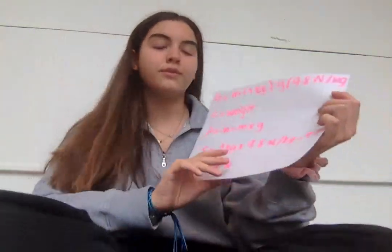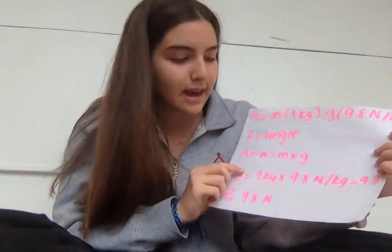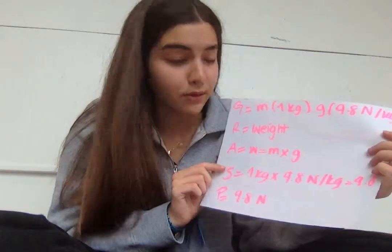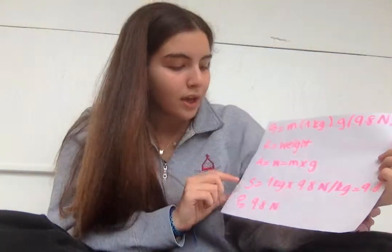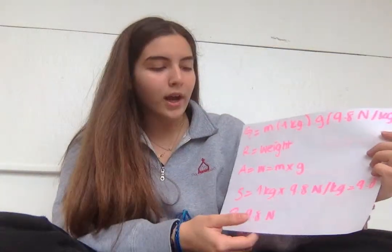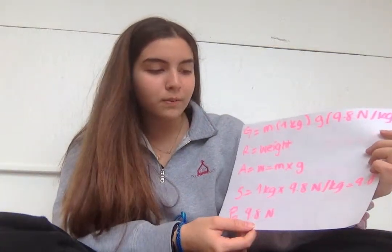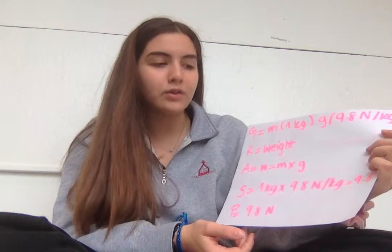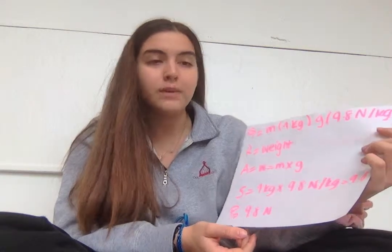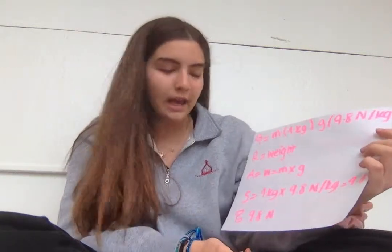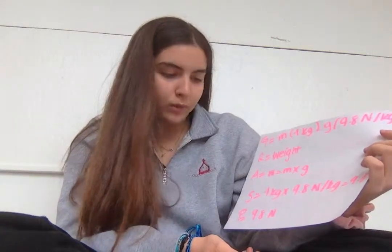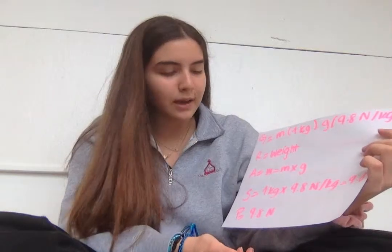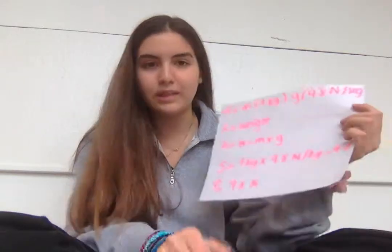The formula for weight is mass multiplied by force of gravity. So 1 kilogram multiplied by 9.8 Newtons per kilogram is 9.8. So the weight for this object is 9.8 Newtons.